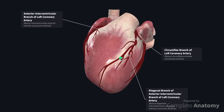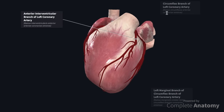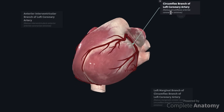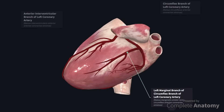As the anterior interventricular artery continues towards the apex, it may anastomose with the posterior interventricular artery. The circumflex branch will continue towards the diaphragmatic surface of the heart. As it approaches the left margin, the left marginal artery will arise to continue towards the apex. As the circumflex branch continues onto the diaphragmatic surface, it may anastomose with the right coronary artery.